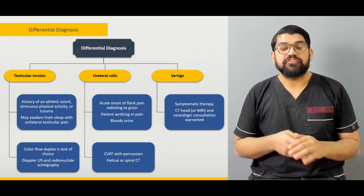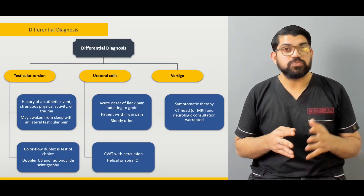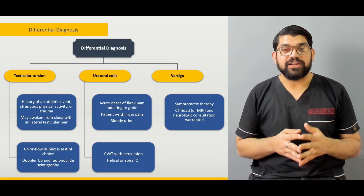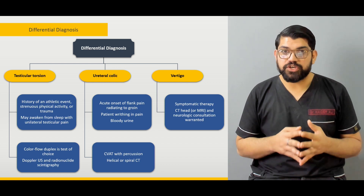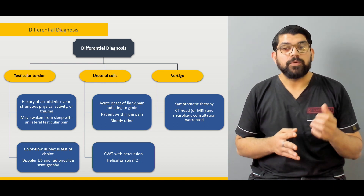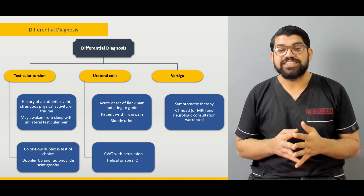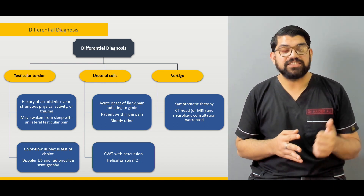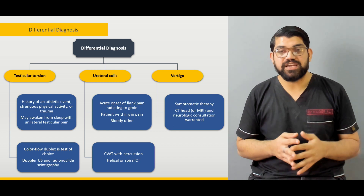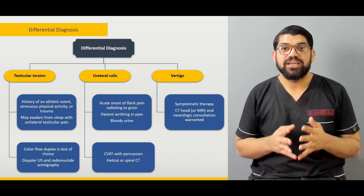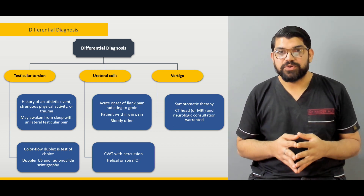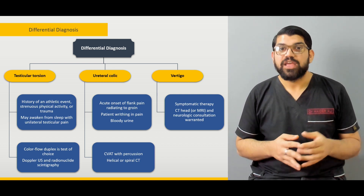Further differential diagnosis: we'll talk more about testicular torsion and ovarian torsion. We'll talk in more detail about ureteric colic — the signs and symptoms, how they present, and what are the diagnostics of ureteric colic.